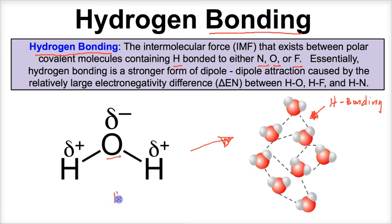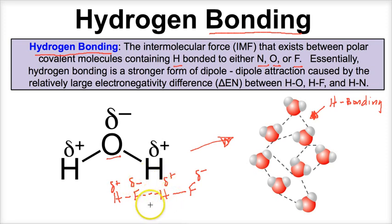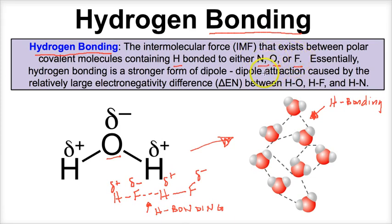The same thing would play out if you had a bunch of HF molecules — hydrogen fluorides. Because you have hydrogen bonded to fluorine, one side of the molecule is slightly negative and the other is slightly positive. There's going to be an intermolecular force between the oppositely charged ends of neighboring molecules, and that intermolecular force is hydrogen bonding. Hydrogen bonding is essentially the same as dipole-dipole attraction — just a little stronger. It occurs between hydrogen and nitrogen, hydrogen and oxygen, and hydrogen and fluorine. These molecules typically have higher boiling points since it requires more energy to separate them.